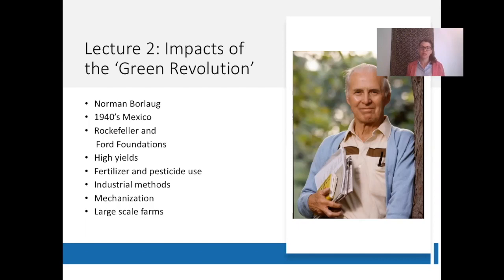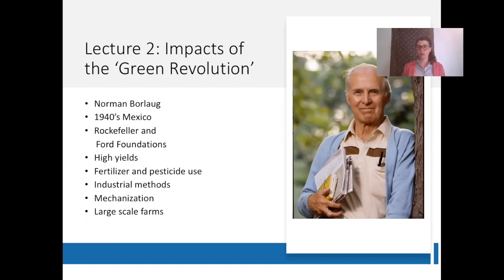The beginning of the Green Revolution is often attributed to Norman Barlow, who's pictured here. He was an American scientist interested in agriculture, and in the 1940s he began conducting research in Mexico, where he developed new disease-resistant high-yield varieties of wheat.